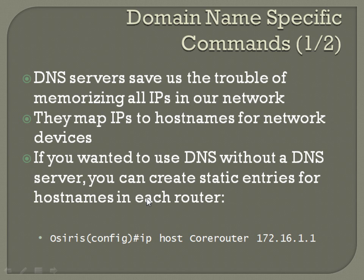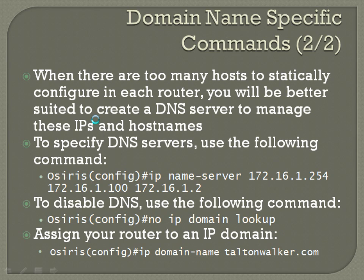The command structure for static host entries is: ip host [name] [IP address]. In this case, the name is 'Core Router' and the IP address is 172.16.1.1. When there are too many hosts to statically configure in each router, you'll be better suited to create a DNS server to manage these IPs and host names. It doesn't take long before statically configuring host names and IPs on each network device becomes way more tedious than even trying to remember the IPs.